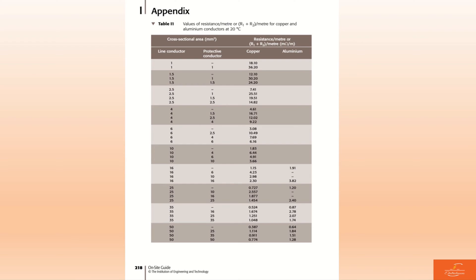In this table, what you actually have in this chart is values of resistance per meter, or what we know as R1 plus R2 per meter, for copper and aluminum conductors at 20 degrees Celsius.